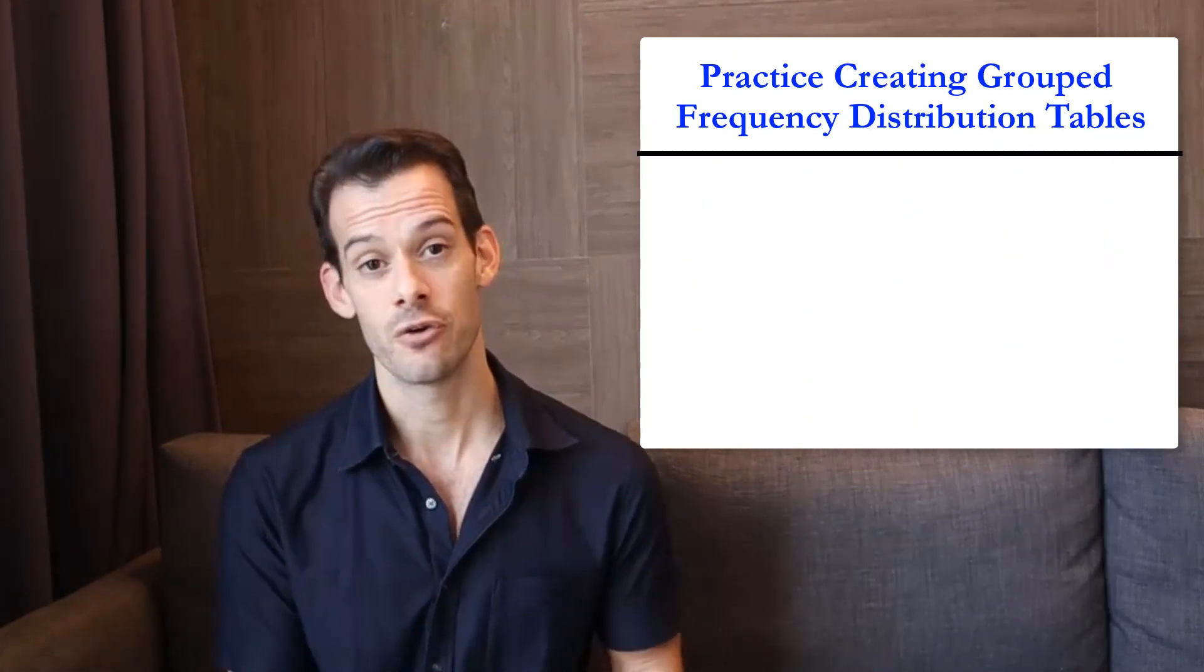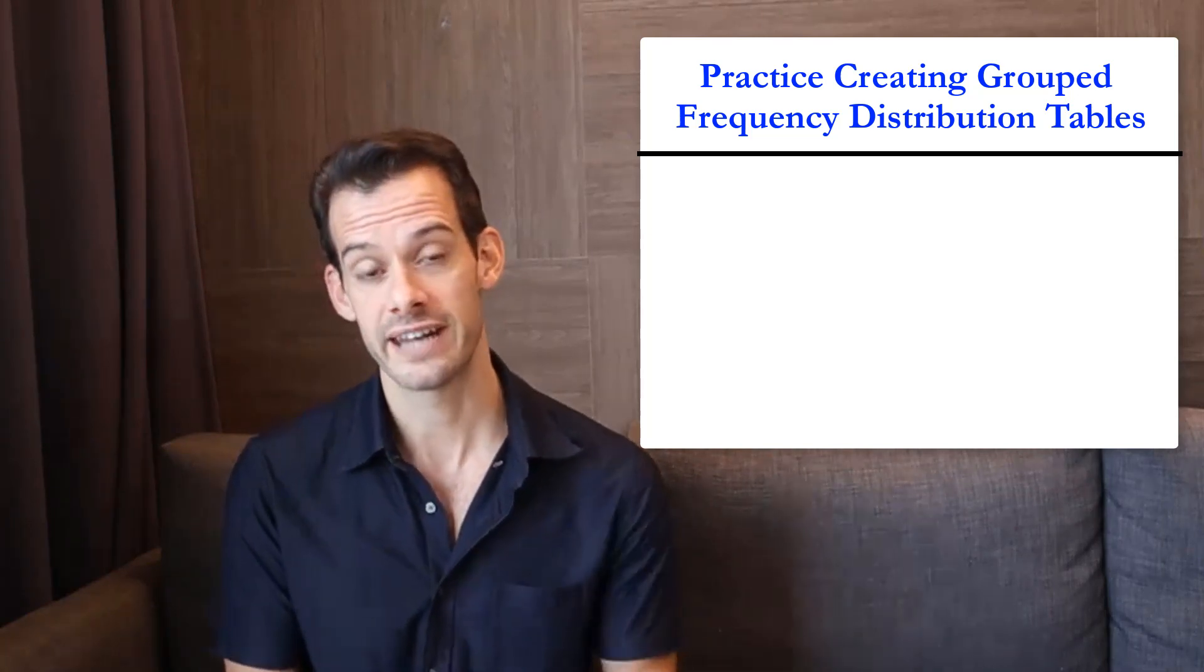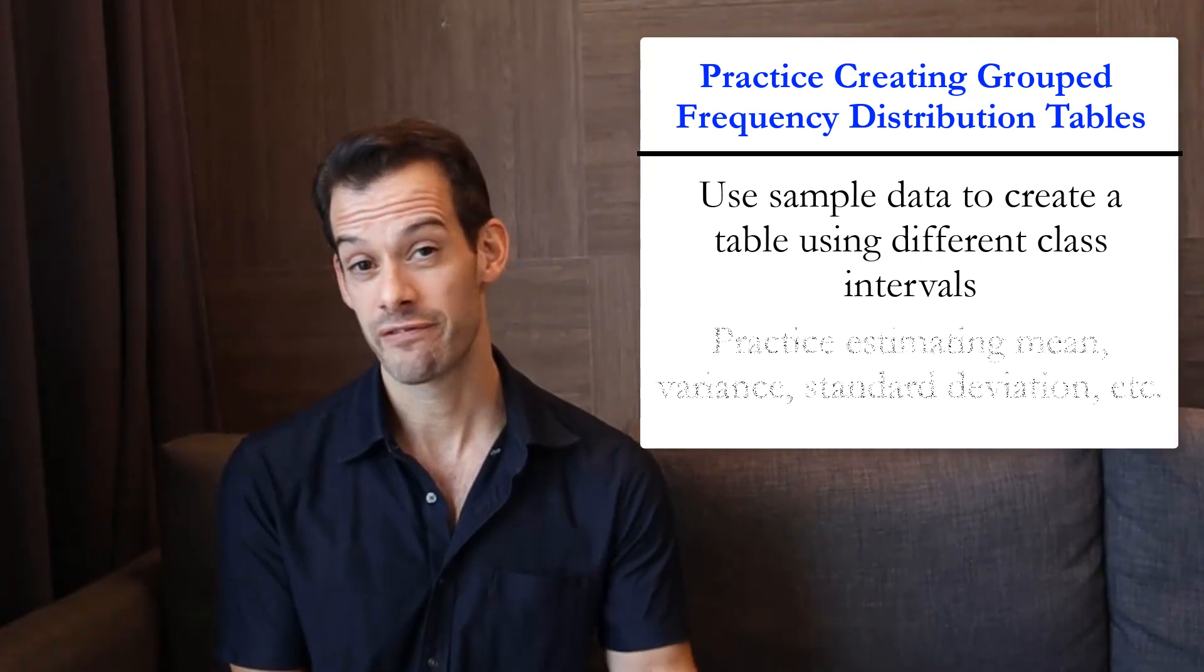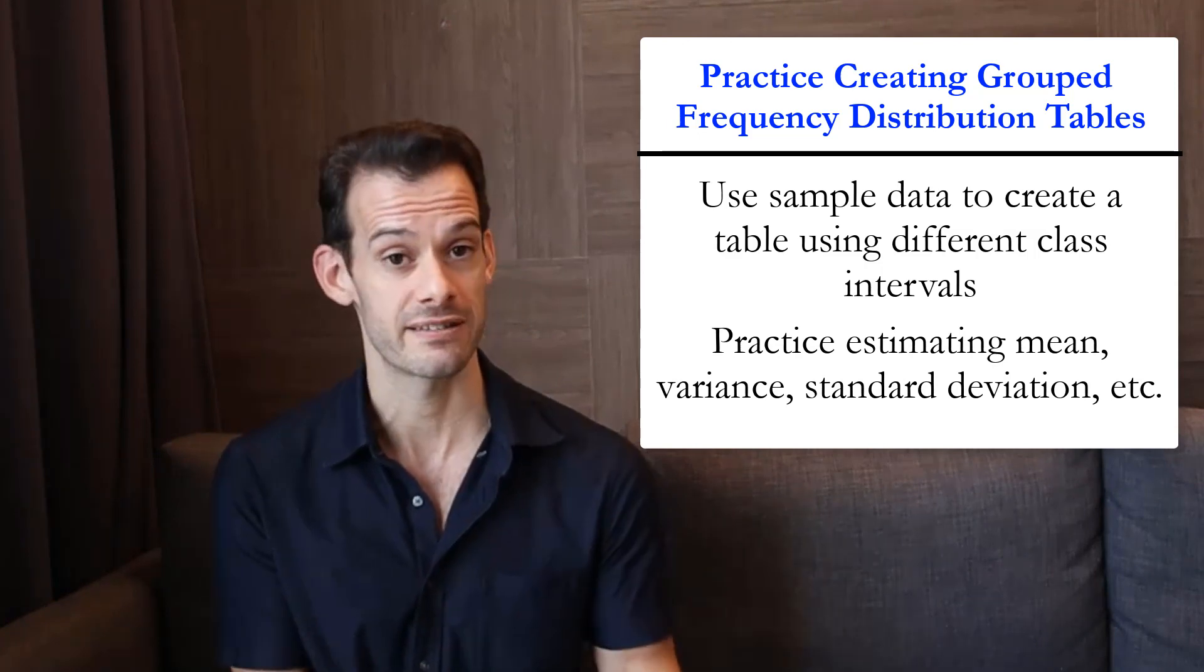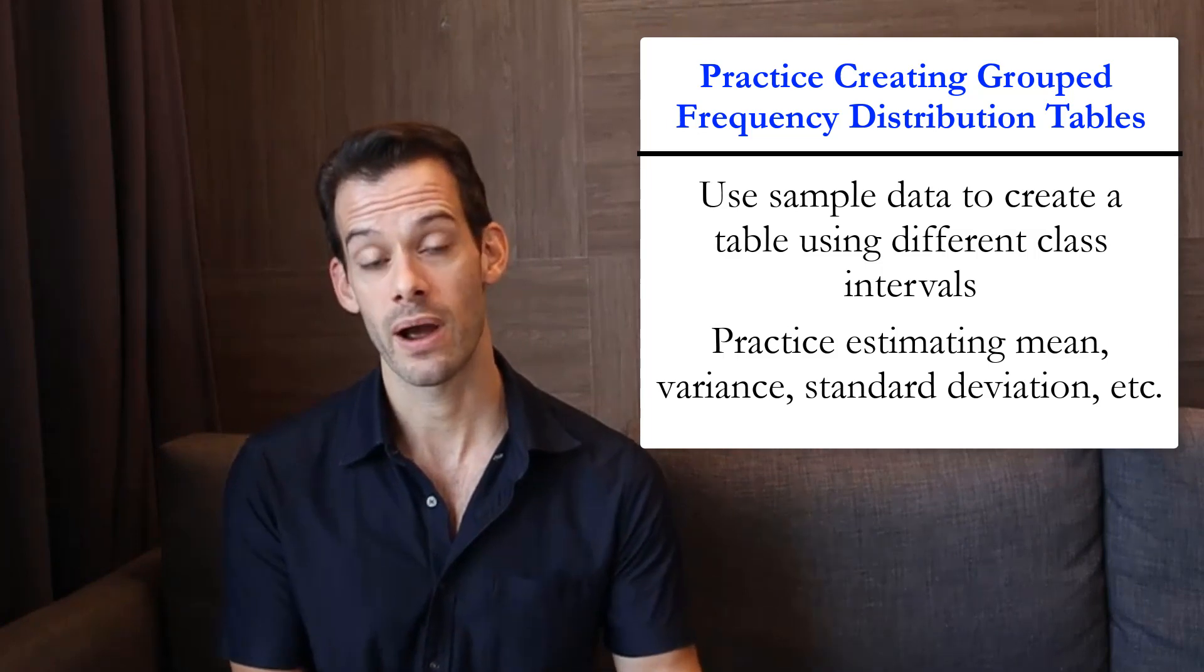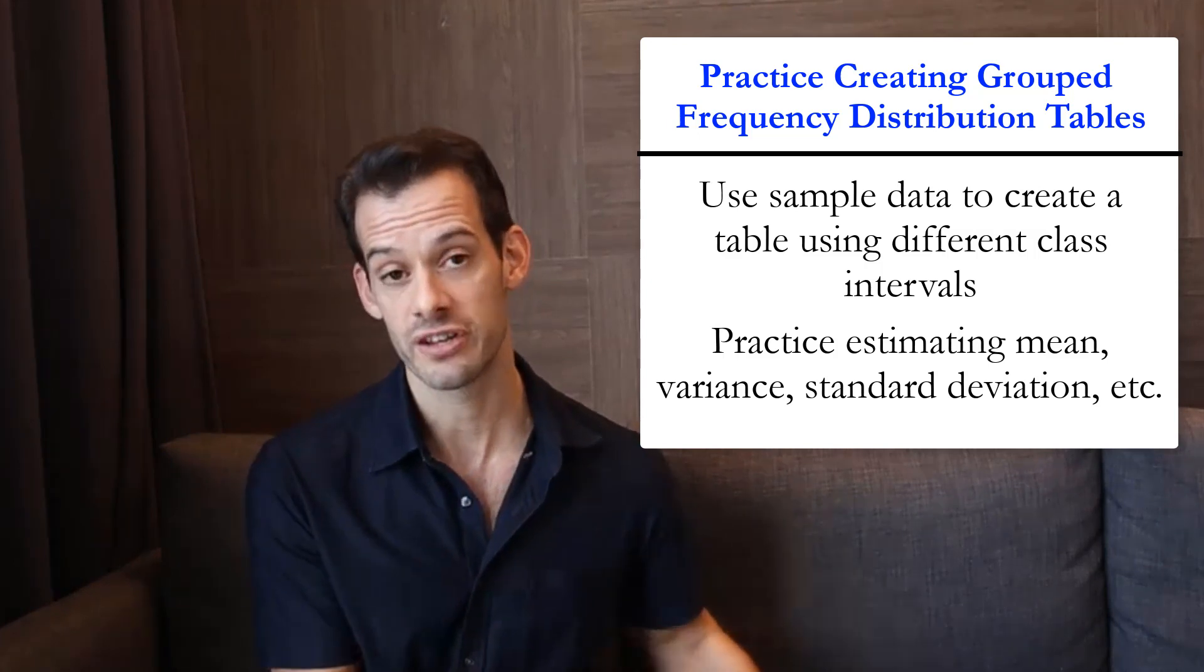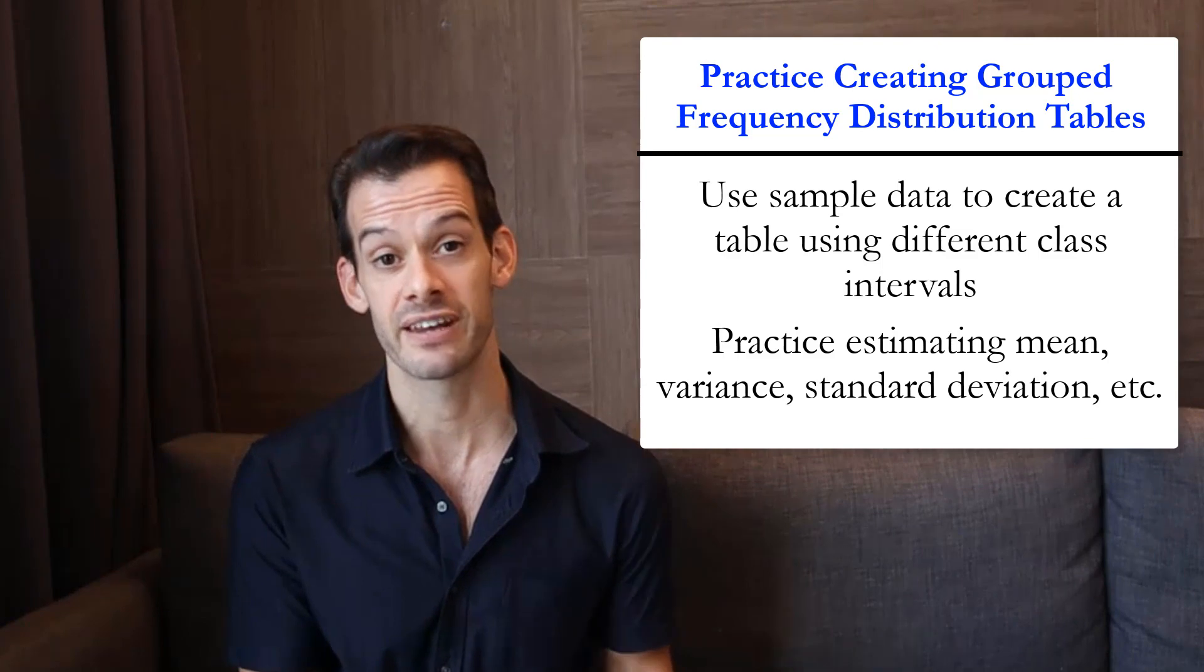I'd highly recommend that you practice making a few grouped frequency distribution tables. You could use the data here and try a different class interval or you could just make up some of your own data. Then you can practice a few different calculations to see how the class interval influences things like the estimates of x-bar or the variance. And hopefully this will give you a better appreciation for the decisions that are made in a grouped frequency distribution, especially choosing the class interval, and how that might influence how the data is summarized and presented.